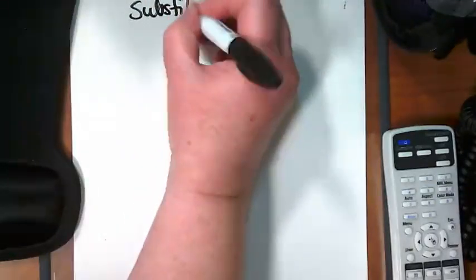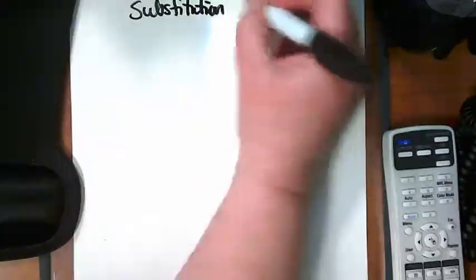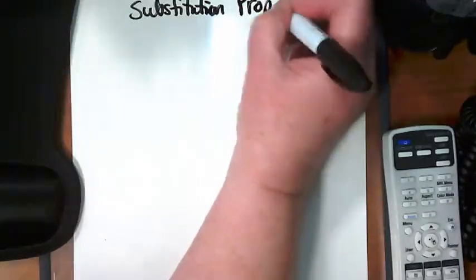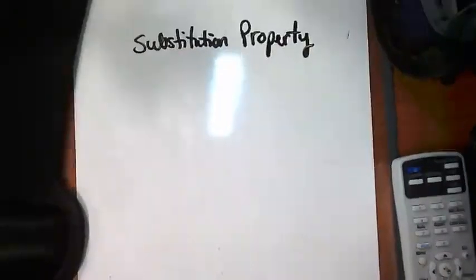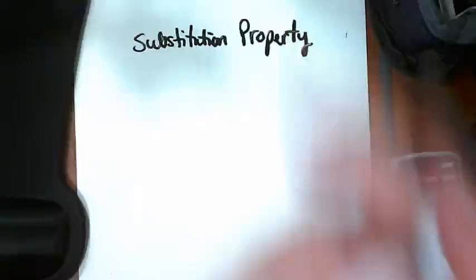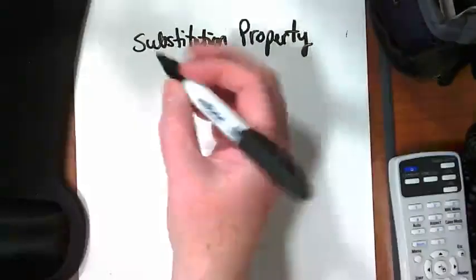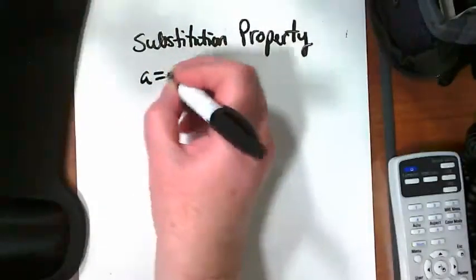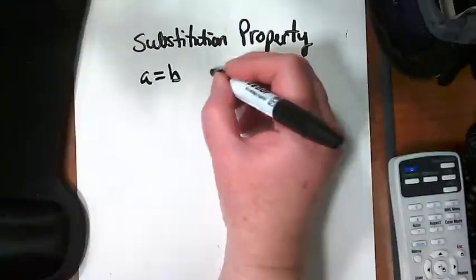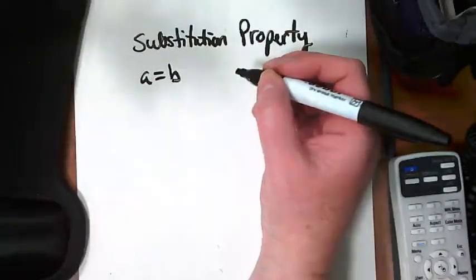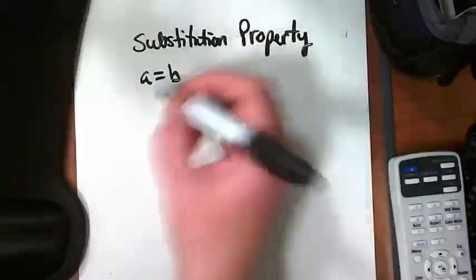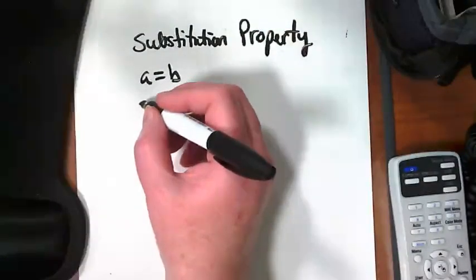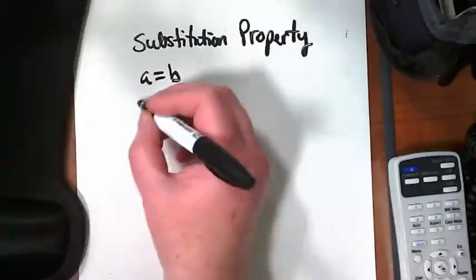As definitions can often be, it shows an algebraic way of explaining this on your page. It says if a equals b, then a can be replaced by b in any expression. Well, that's great, but it doesn't exactly really explain what this is.